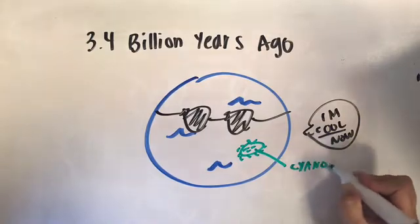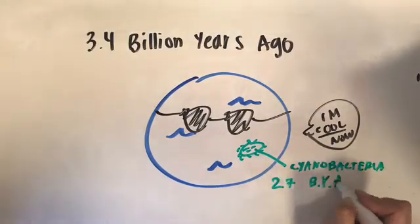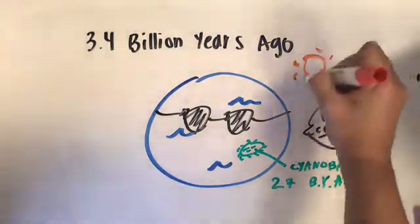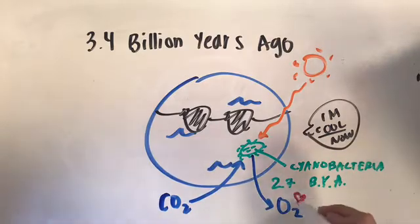These photosynthesizers, known as cyanobacteria, are still around today. We have them to thank for the Earth's major increase in atmospheric oxygen. In fact, the first rock evidence of atmospheric oxygen shows up around 2.4 billion years ago.